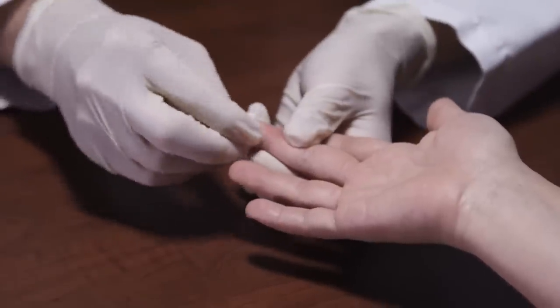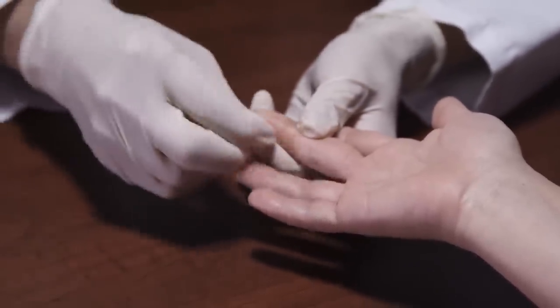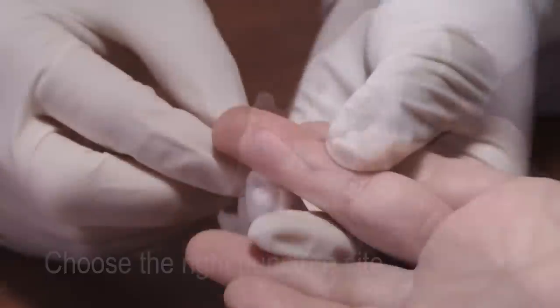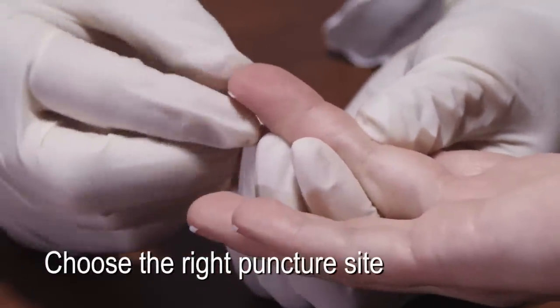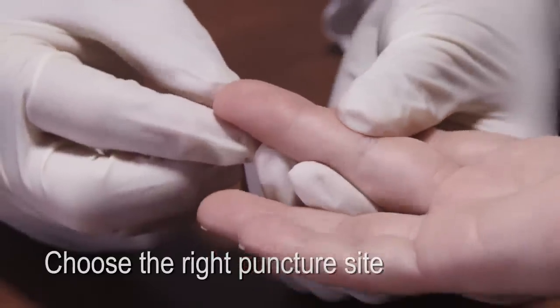Clean the testing site with an alcohol swab, then air dry the testing site thoroughly. Puncture the side of the middle or ring finger for easier sampling. Use a different finger if the finger is callous.